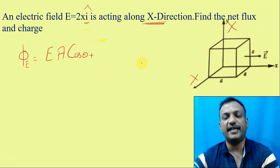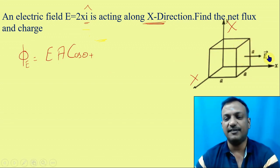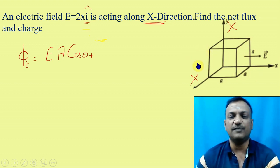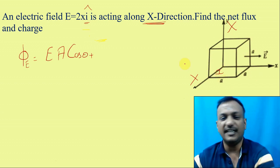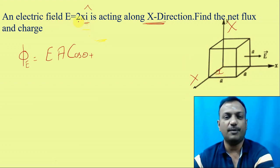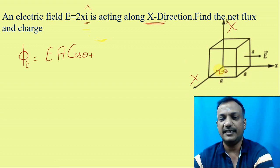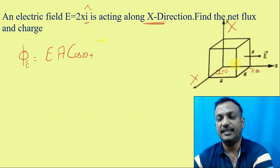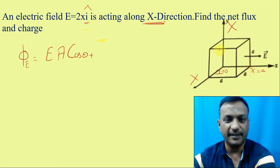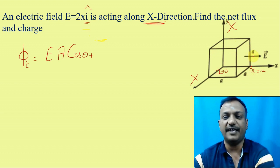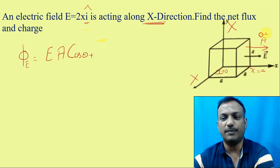How much is the flux going to act along the x-direction? I am looking at the surface. Now, the electric field is changing depending upon the distance. At this point, x value is 0. At this point, x value is A. If you draw a perpendicular on this surface, you will draw a vector.